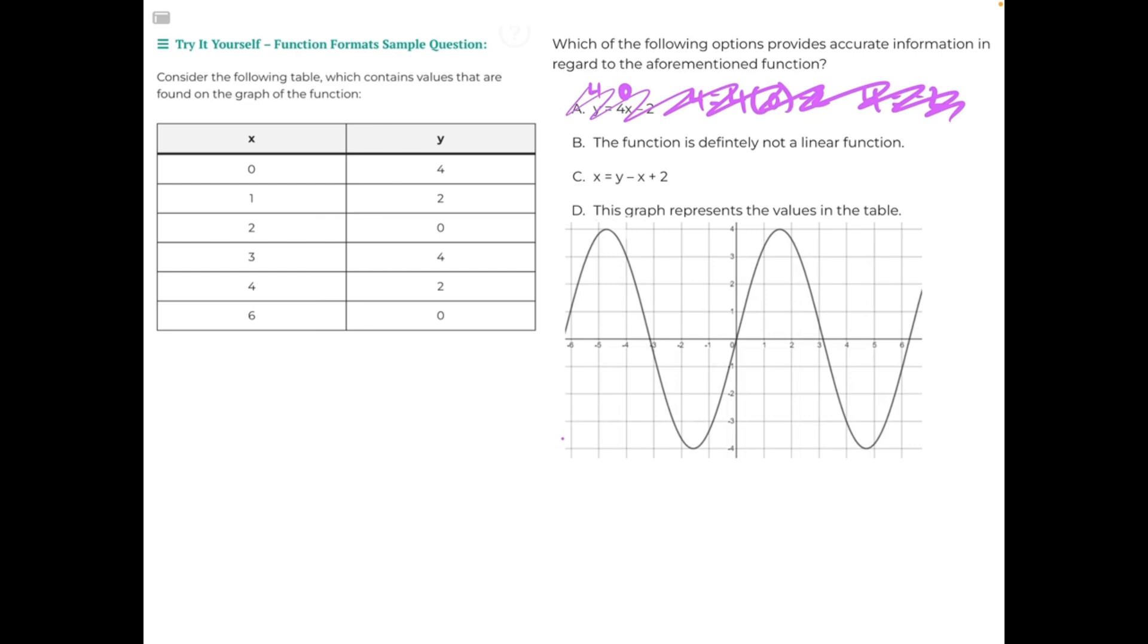That's a good method to use if you are stuck and you need to eliminate answer choices, but I feel that the fastest way to get to our correct answer is just by analyzing our table. If we take a look at our x values, we can see that the x values are increasing at a consistent rate, which indicates that we're looking at a linear function, a straight line that is going infinitely in the positive direction.